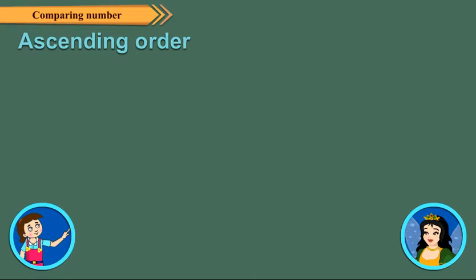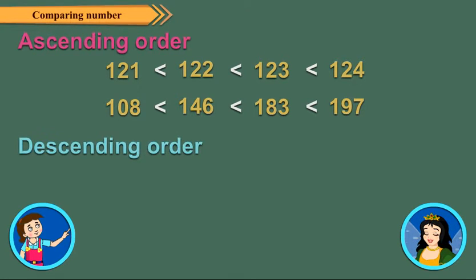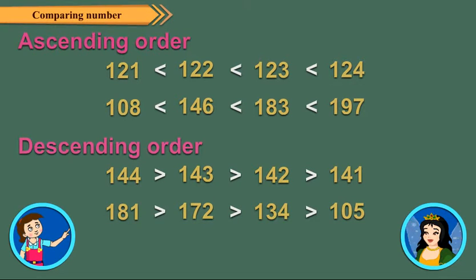Very good. In fact, arranging numbers from the smallest to the greatest is known as ascending or increasing order. Also, arranging numbers from the greatest to the smallest is known as descending or decreasing order.